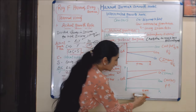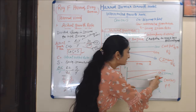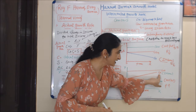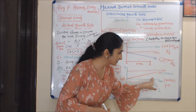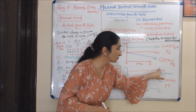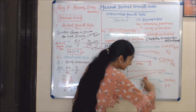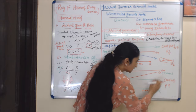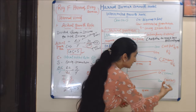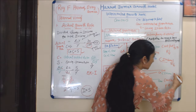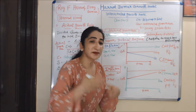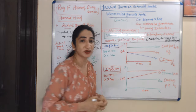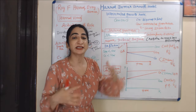In the second diagram, the warranted growth rate is less than the natural growth rate and actual growth rate. Here, the actual growth rate (red line) represents growth in income, while the warranted growth rate represents growth in output. Income is more than output — demand exceeds supply — which causes prices to rise. If prices continue to rise, it creates a situation of inflation.